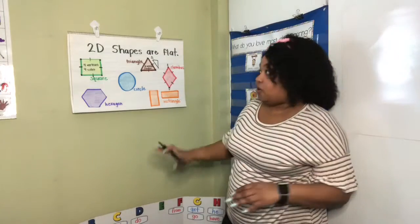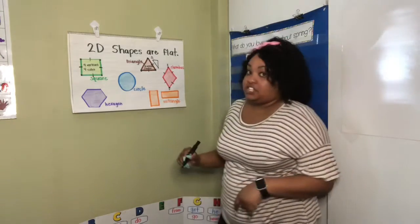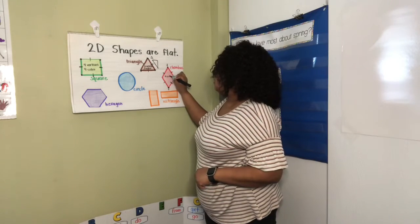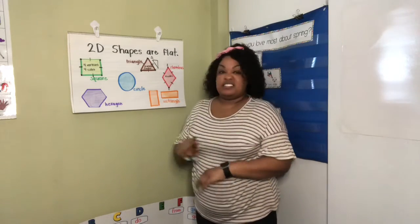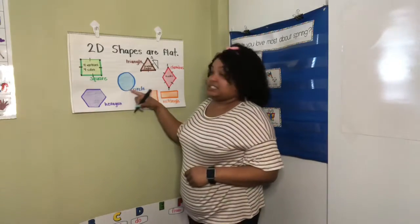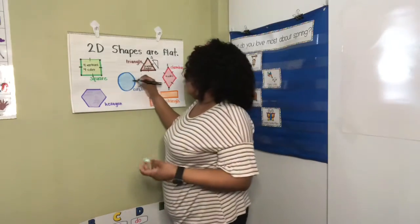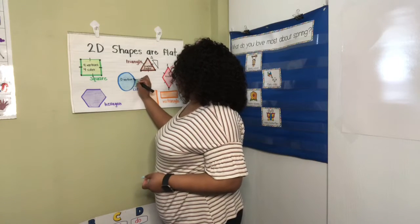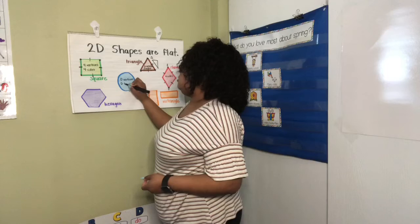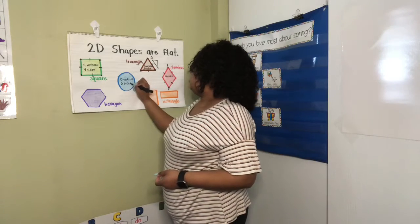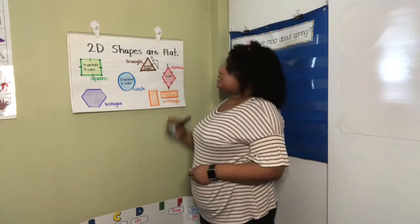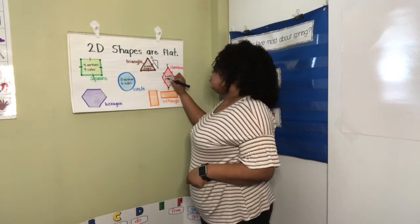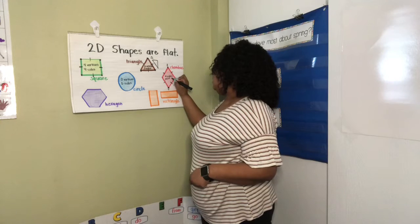A circle out of all of these shapes is extra special. A circle has zero corners, zero vertices, and zero sides. And a circle is easy to be found. A circle is a shape that's easy to be found. It has no corners anywhere. It is completely round.